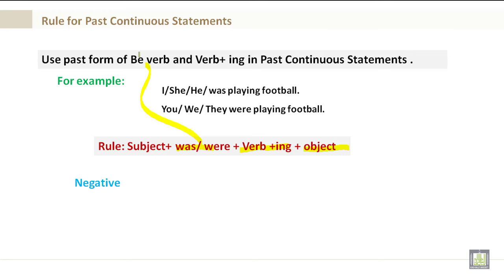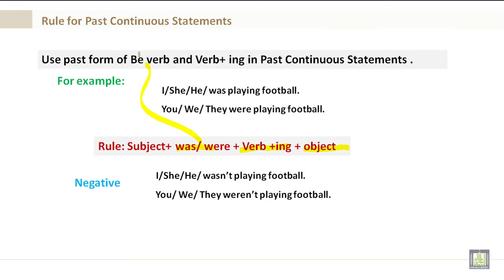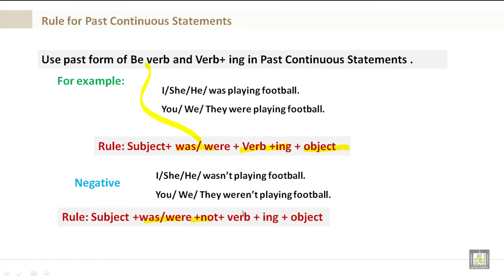Negative: Let's take a look at the negative. I wasn't playing football. She or he wasn't playing football. You, we, or they weren't playing football. The rule is: subject plus was or were plus not plus the verb plus -ing plus the object. The contraction of was not is wasn't, and the contraction of were not is weren't. Thank you.